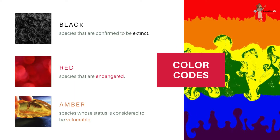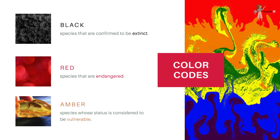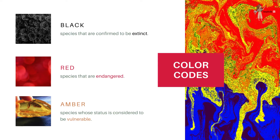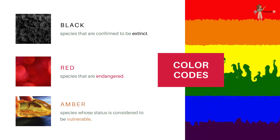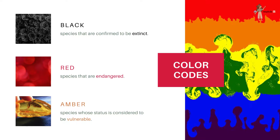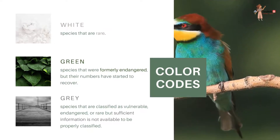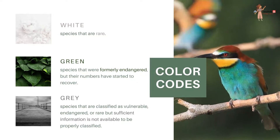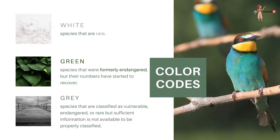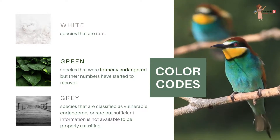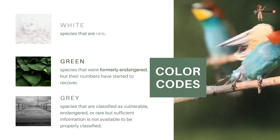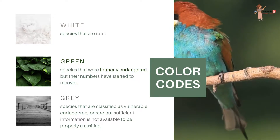The color codes are as follows. Black is for the species that are confirmed to be extinct. Red is for the species that are endangered. Amber is for species whose status is considered to be vulnerable. White represents those species which are rare. Green means species that were formerly endangered but their numbers have started to recover. Gray is for species that are vulnerable, endangered or rare, but unfortunately we don't have sufficient information or data to classify them properly.